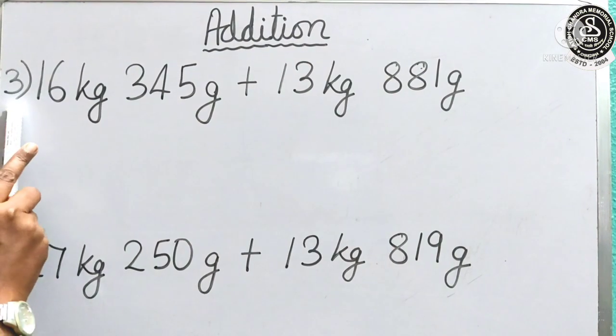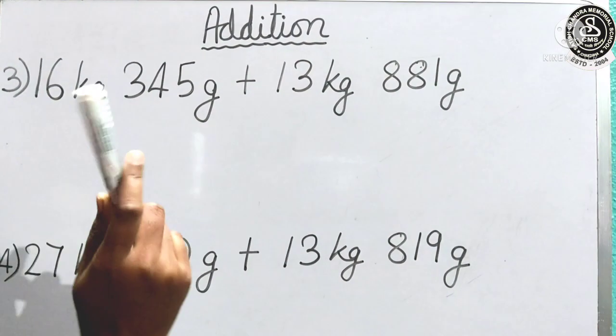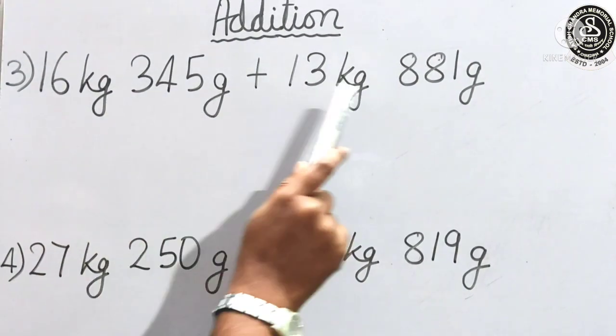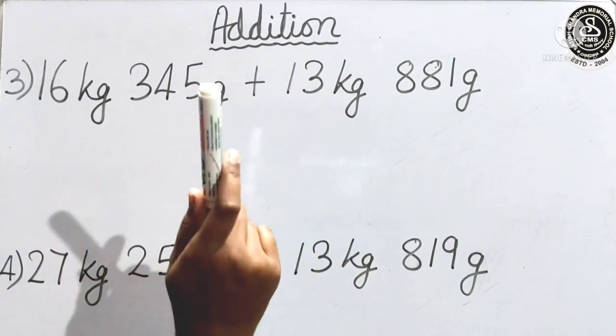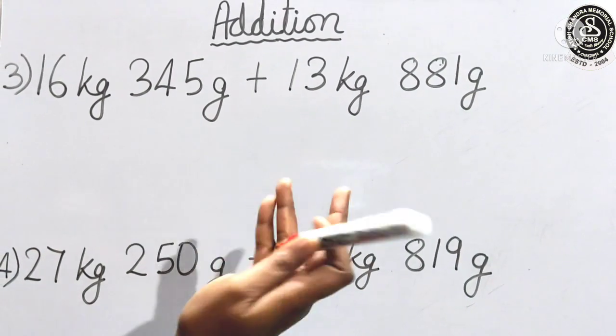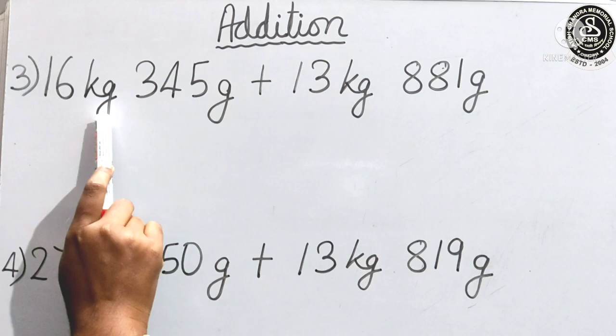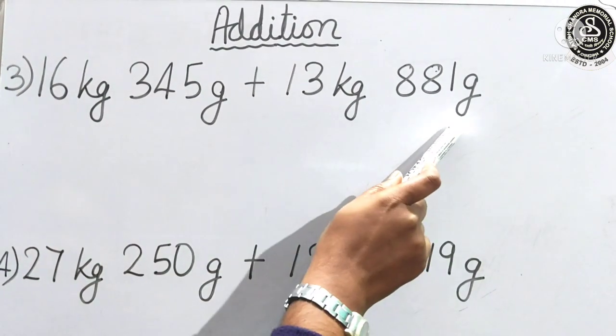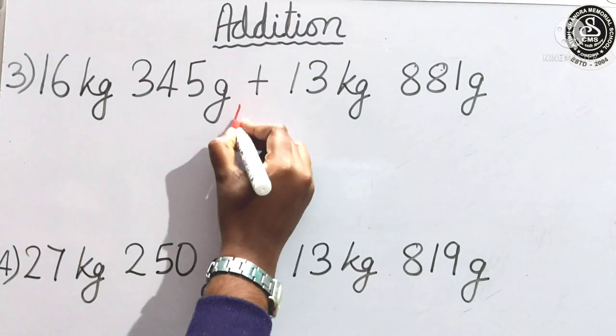Now, I have written number 3 example. Children, previously what we are doing. That one already arranged in column. But here it is not arranged in column. So, first work will be. We will arrange all this in a column. Now, how to arrange it? First, we can see kilogram and then gram. Here also kilogram and gram. So, we will write the unit first.